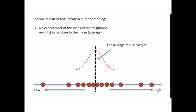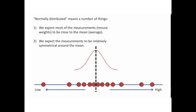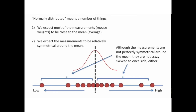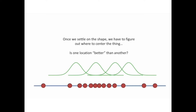Normally distributed means a number of things. First, we expect most of the measurements to be close to the mean — that is, the average mouse weight — and most of the mouse weights cluster around the average. Second, we expect the measurements to be relatively symmetric around the mean, meaning the distribution should be symmetrical on both sides of the mean, not crazy skewed to one side. Normal distributions come in all kinds of shapes and sizes — skinny, medium, or large.